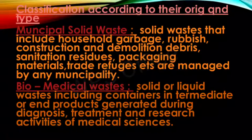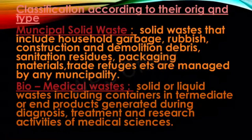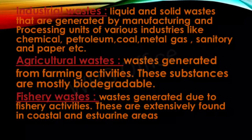Classification based on origin and type: the first is municipal solid waste, which includes household garbage, rubbish, construction and demolition debris, sanitation residues, and packaging materials managed by municipalities. The second type is biomedical waste — solid or liquid wastes including containers and products generated during diagnosis, treatment, and research activities of medical sciences. The third type is industrial waste — liquid and solid wastes generated by manufacturing and processing units.